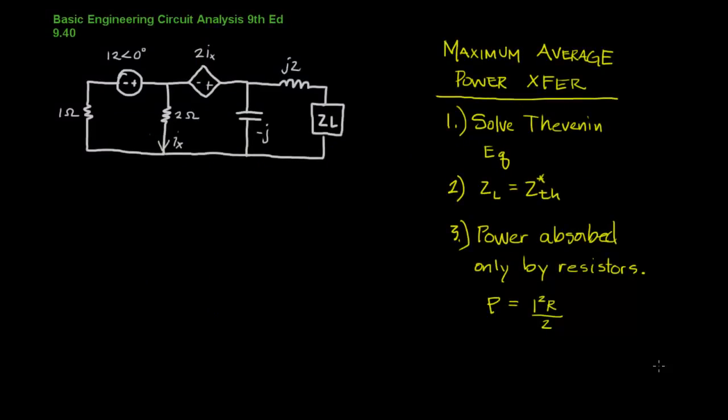Okay, let's take a look at a problem involving maximum average power transfer. This example is going to be a great review of everything that we've done thus far. Maximum average power transfer works very similar to maximum power transfer for which there was a video earlier involving only resistive networks.